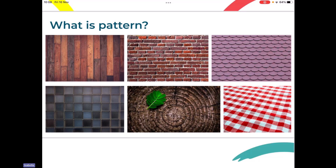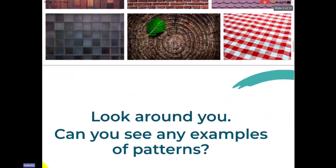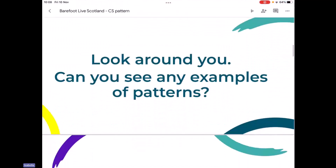Some patterns we see are simpler than others, like the roof tiles — they are all the same, just laid out very carefully in order. So we can have different types of patterns. What I'd like you to do now is wherever you are, whether you're in a classroom or at home, look around your area and see if you can see any examples of patterns. You might have to look quite carefully — look up, look down, and you might even want to look at your clothes.